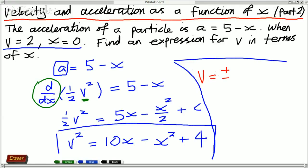So v equals positive or negative square root of 10x minus x squared plus 4 and that is our expression and considering our initial values, our initial point here...